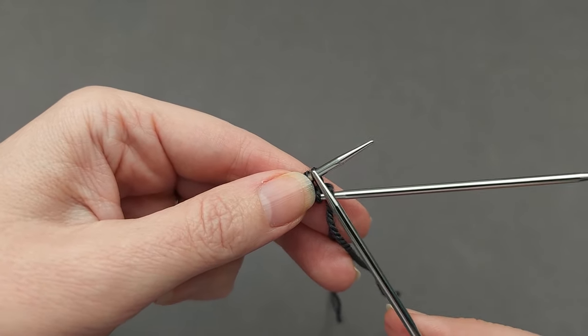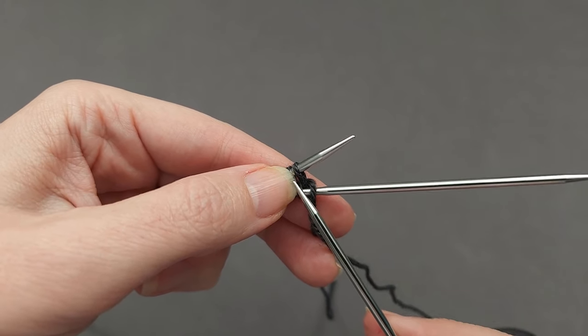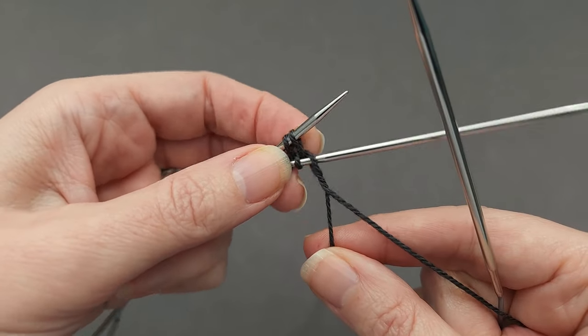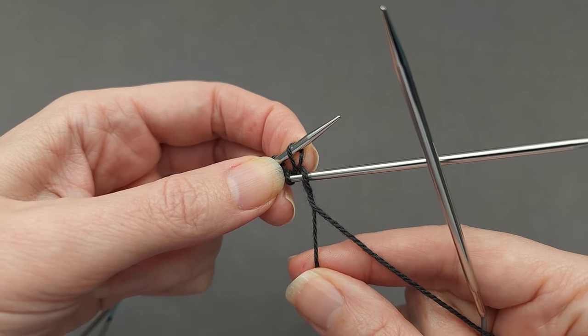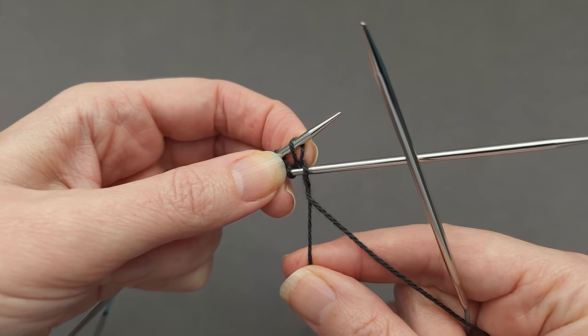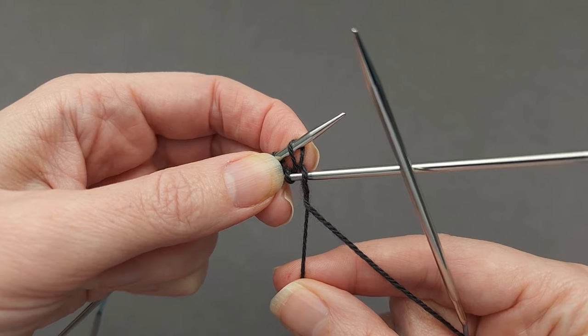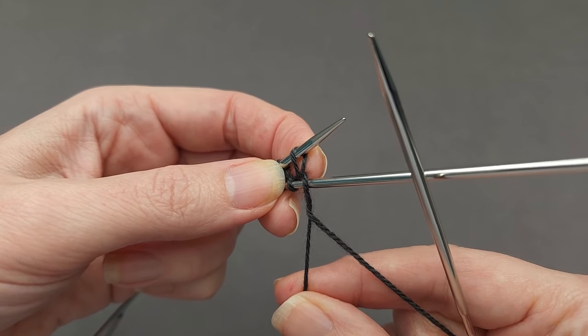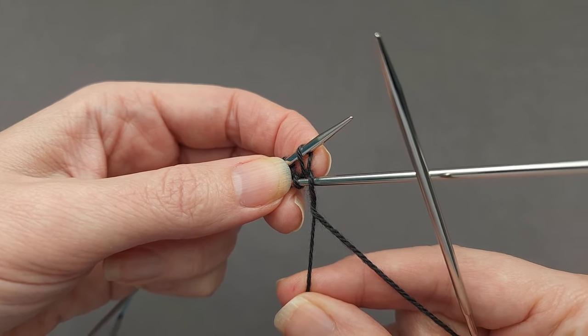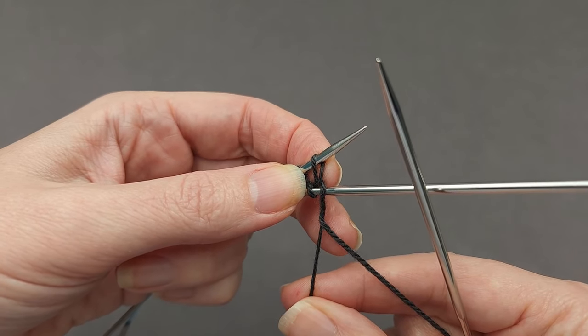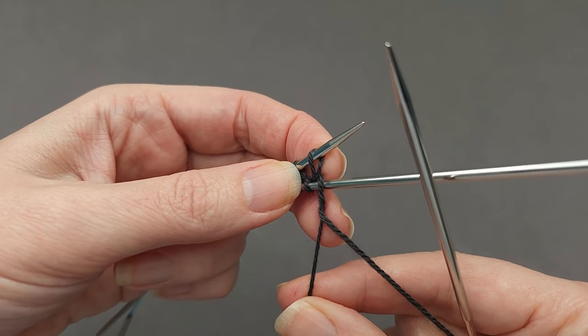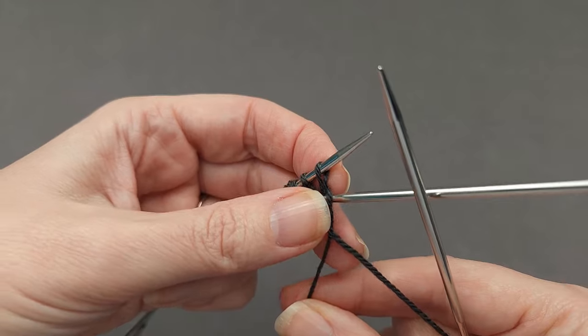We also want to make sure that we knit the stitches on the second half of the round through the back of the loop because they don't have a conventional stitch mount. Usually you would expect to see the leading leg of a stitch at the front, but because of the way we loop the yarn onto the needle while casting on, the leading leg of the stitch is positioned at the back.